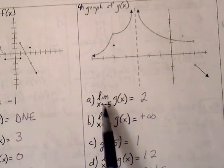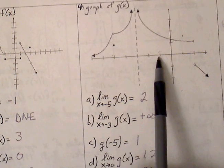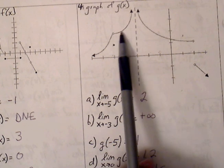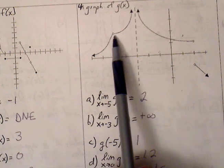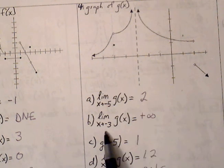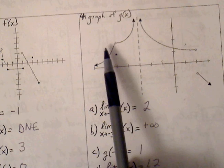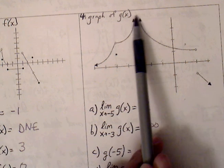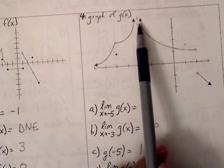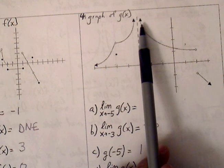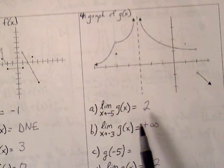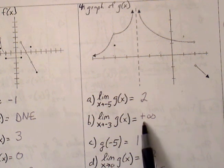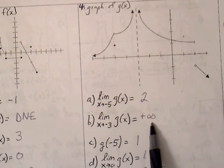For number 4: the limit as x approaches negative 5 — the graph connects to the same point at a y-value of 2. For the limit as x approaches negative 3, the graph is approaching a vertical asymptote. The limit does not exist because both branches do not approach a real number; more specifically, both branches are approaching positive infinity.